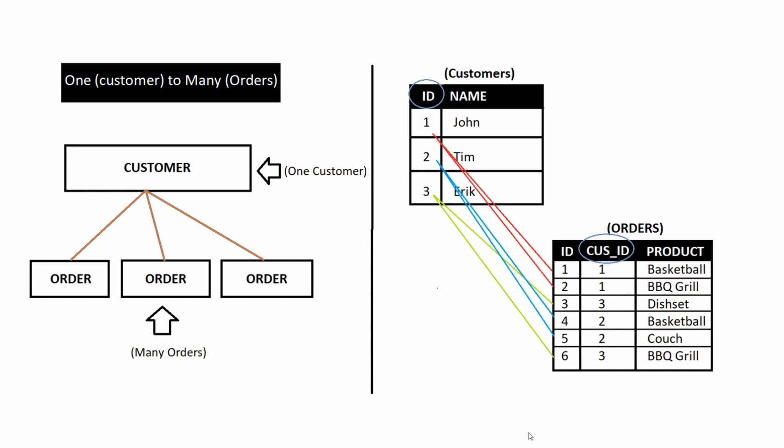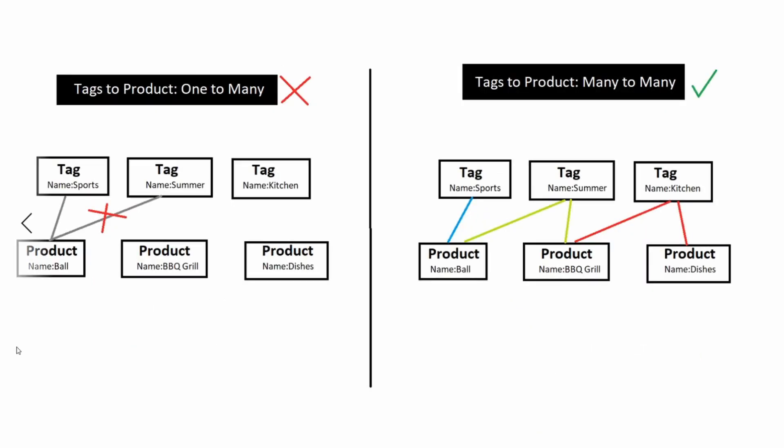Now to explain a many-to-many relationship, I'm going to use a different concept. We're going to have a store that we built out with products, and each product can have some tags attached to it. I'm sure we've all seen this on websites when we're shopping — a product may have certain tags like outdoor, sporting, or whatever that may be.